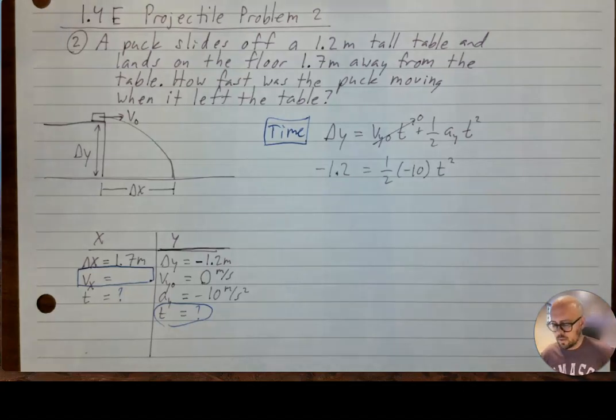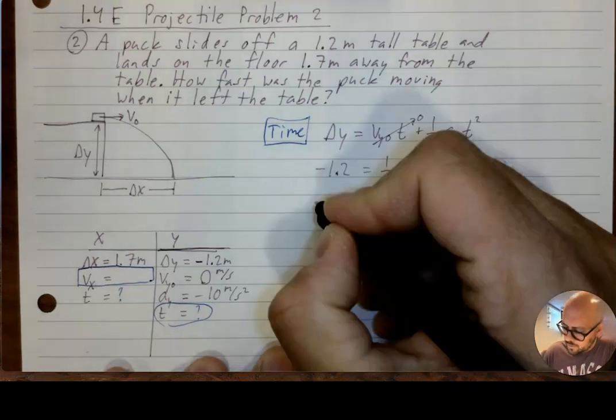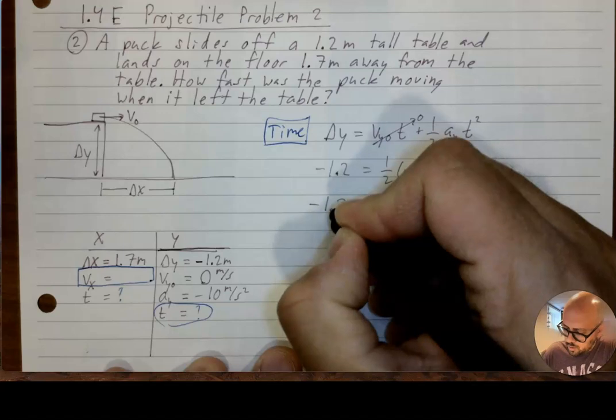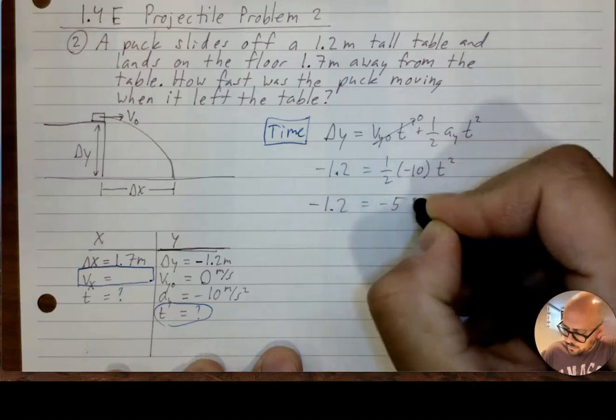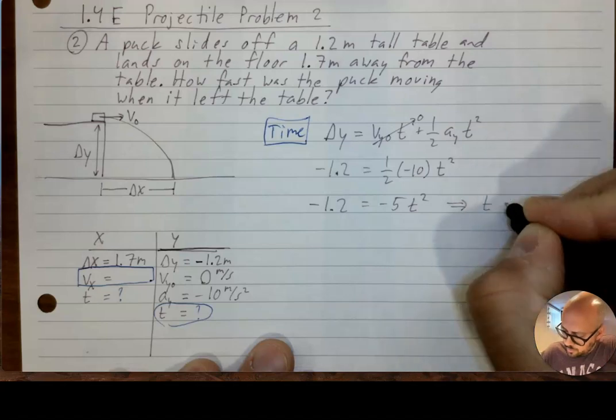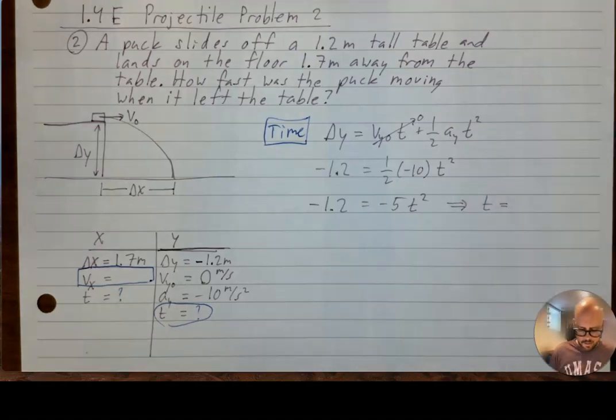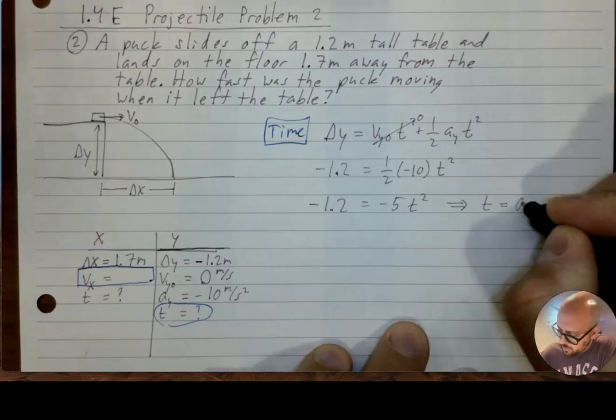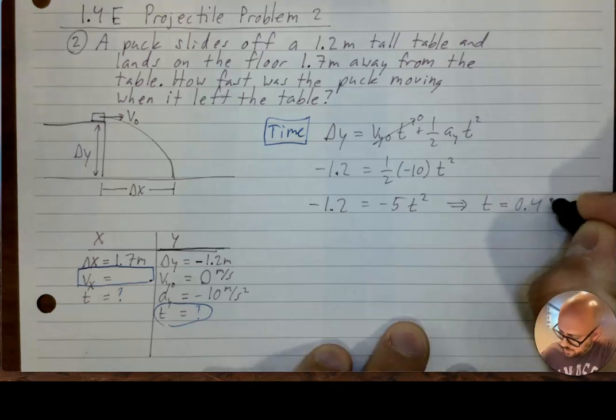Using 10 for g makes your math much easier. And they do that on purpose for the AP exam. So you actually have to use your calculator less because you can think through some of the mental math more easily. So I'm left with negative 1.2 equals negative 5t squared. So I'll let you work through the algebra yourself. But the time is 0.49 seconds.